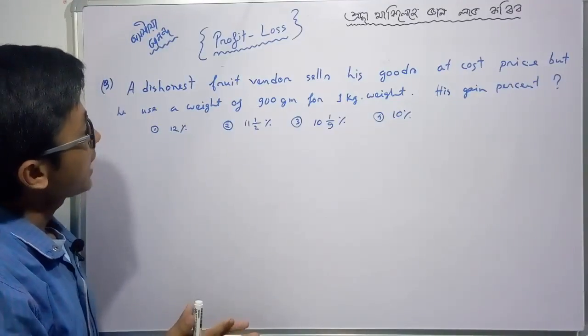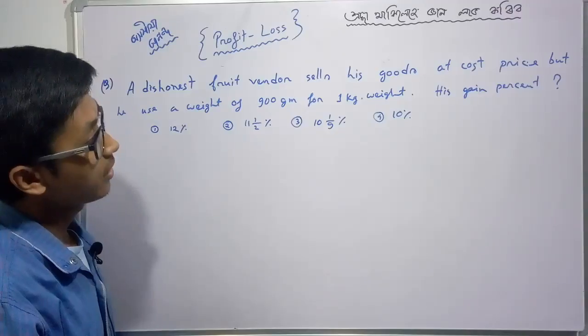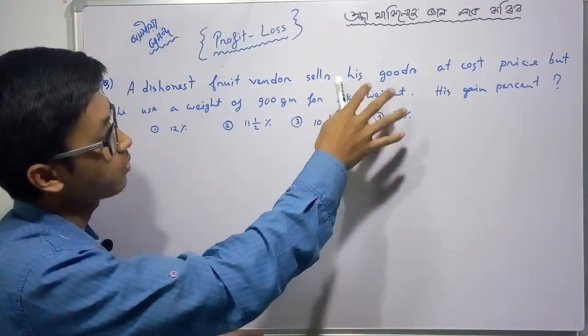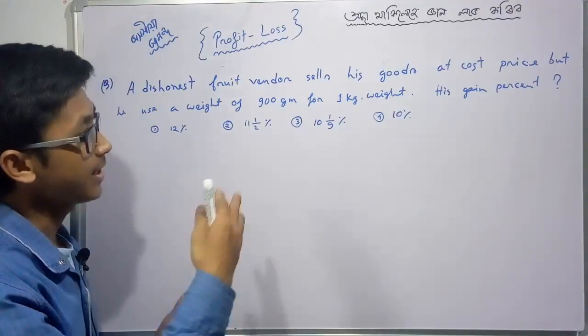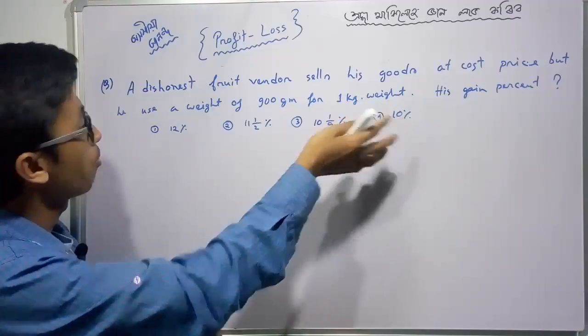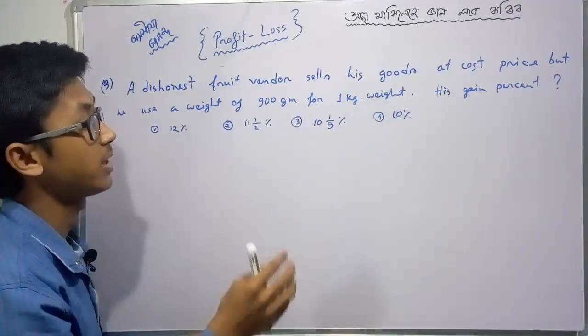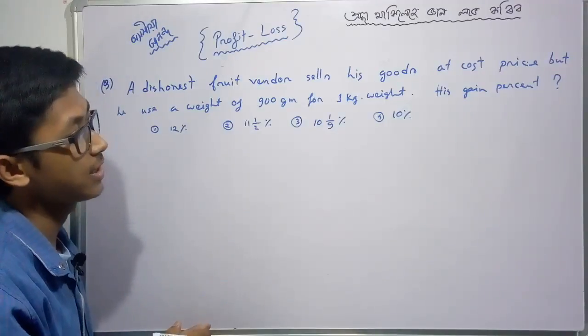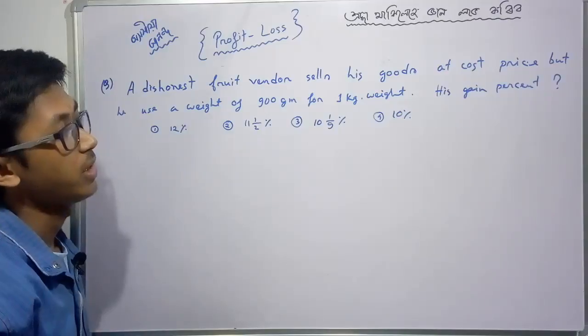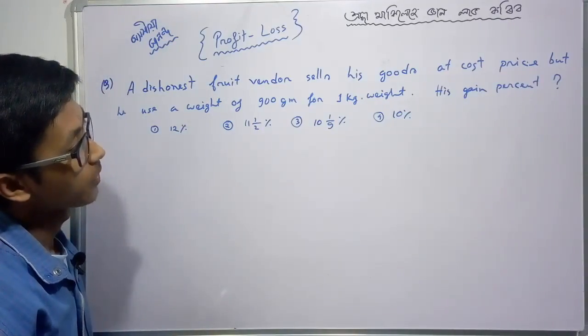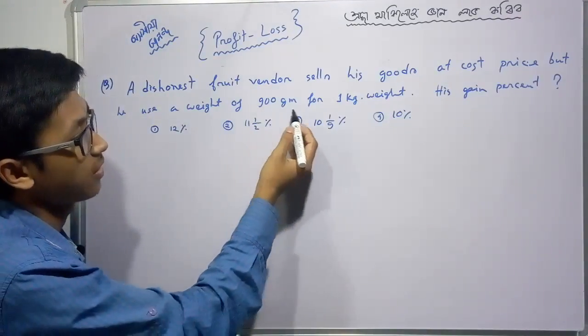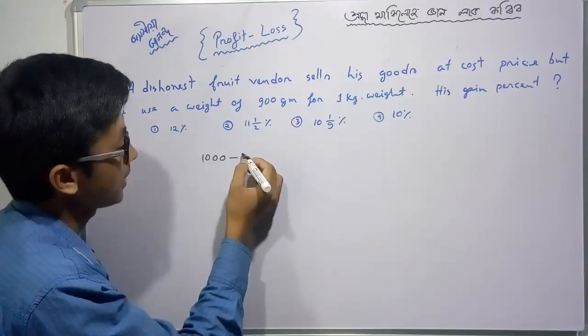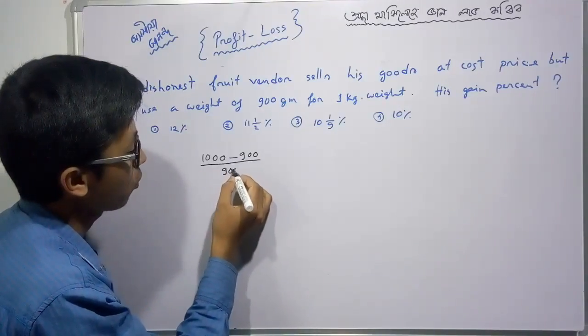Next problem: A dishonest fruit vendor sells his goods at cost price, but he uses a false weight of 900 grams for one kilogram weight. We need to find his profit percentage.